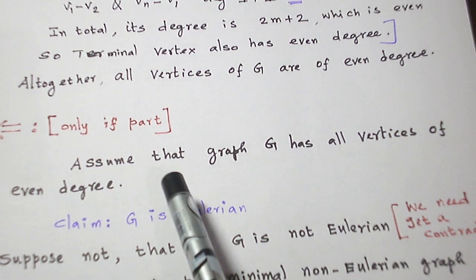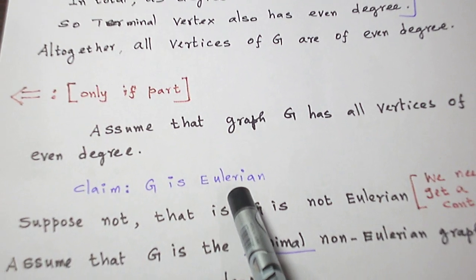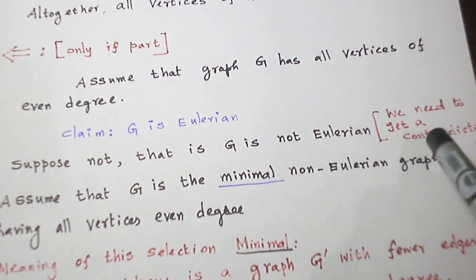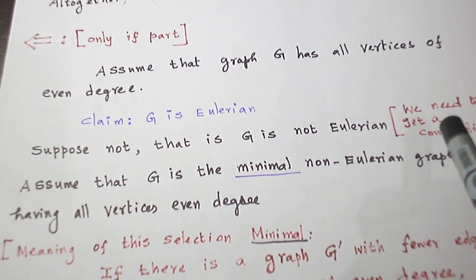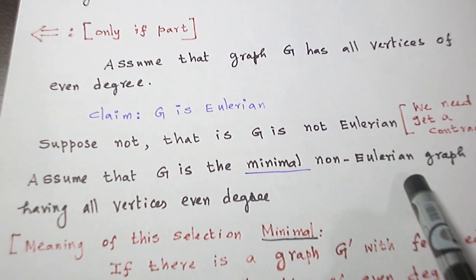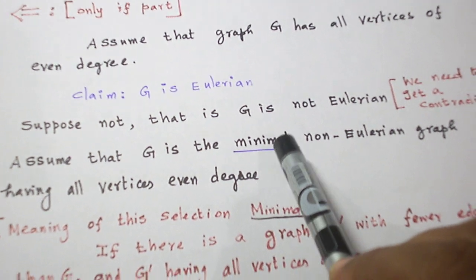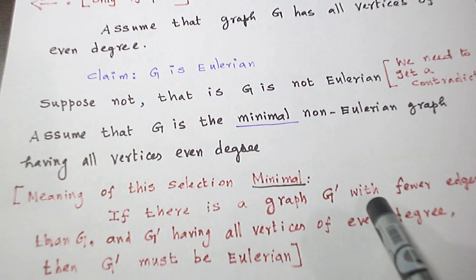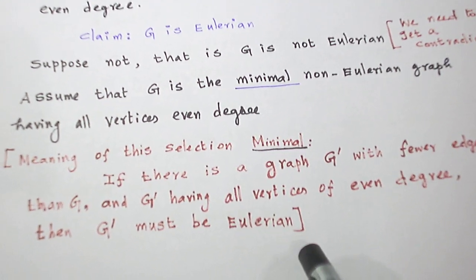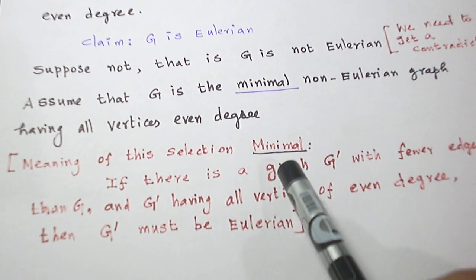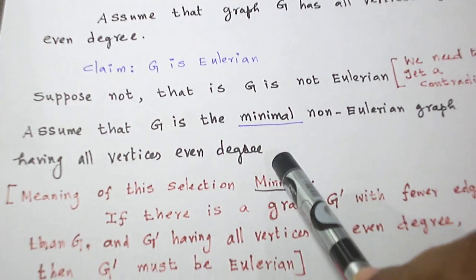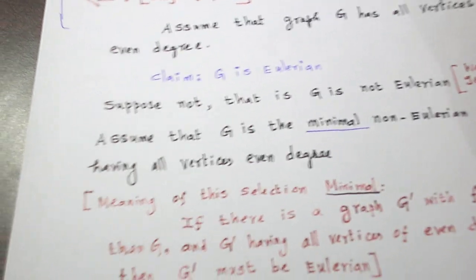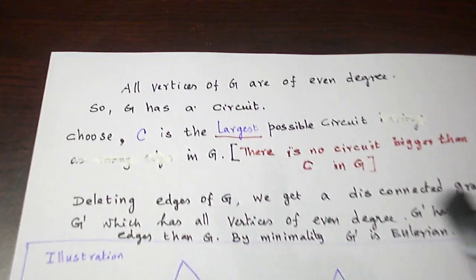Now the only if part. Assume that all the vertices of G are of even degree. I am going to claim G is Eulerian. Suppose not — that is, suppose G is not Eulerian. I have to get a contradiction by the indirect method of proof. For that, I assume G is the minimal non-Eulerian graph. The meaning of minimal is: if there is a graph with fewer edges than G where all vertices are of even degree, then that graph must be Eulerian. So if I prove the theorem for a minimal non-Eulerian graph, then automatically the same can be proved for graphs having more edges.